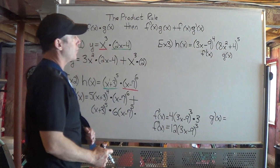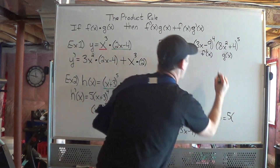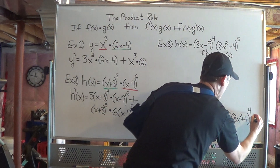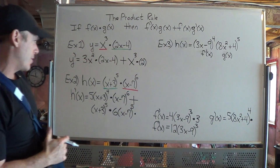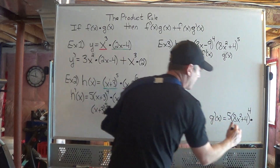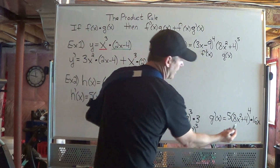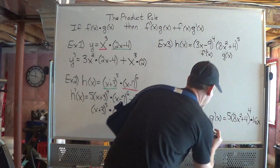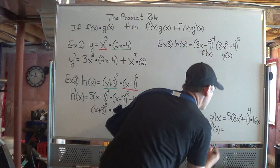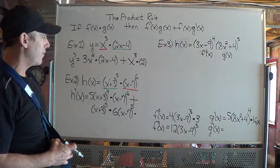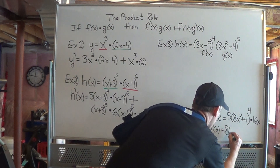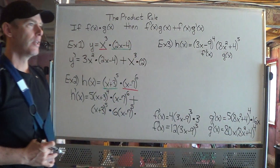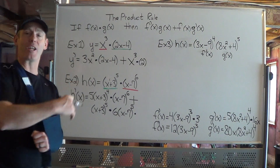Now finding g prime of x: g of x is 8x squared plus 4 to the power of 5. The 5 comes down, I have 8x squared plus 4 to the power of 4, then times the derivative of the inside. The derivative of 8x squared is 16x, and the derivative of 4 is 0. So 5 times 16 is 80. g prime of x equals 80x times 8x squared plus 4 to the power of 4. Now that I have found those derivatives separately, I'm ready to use the product rule.